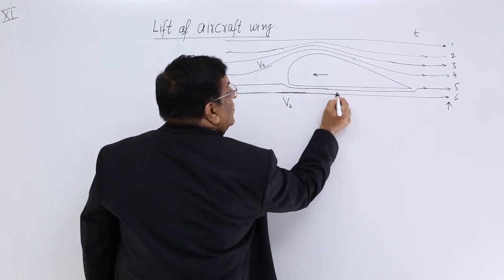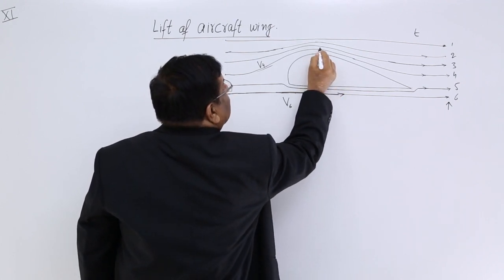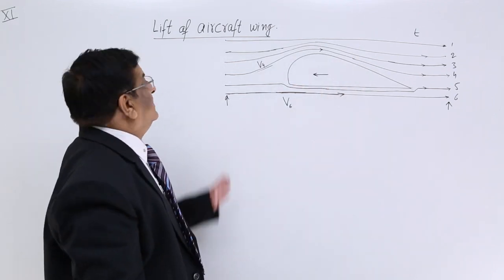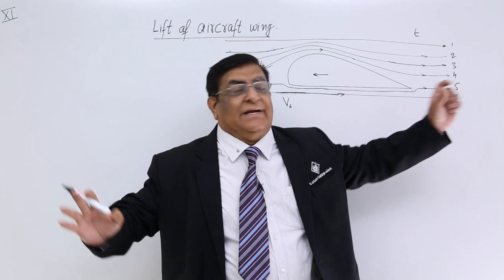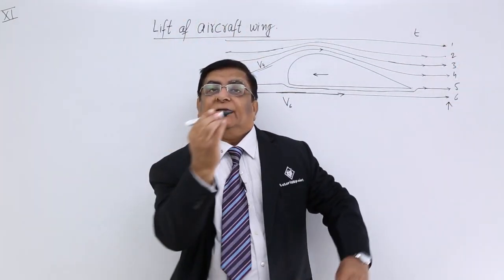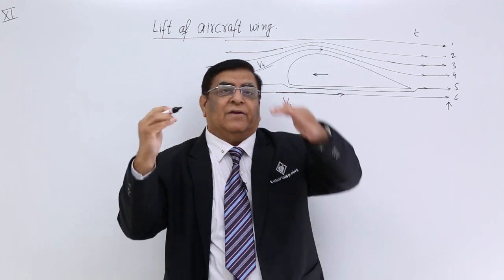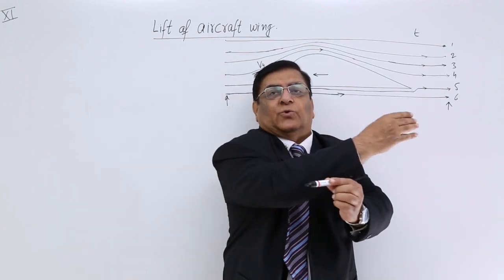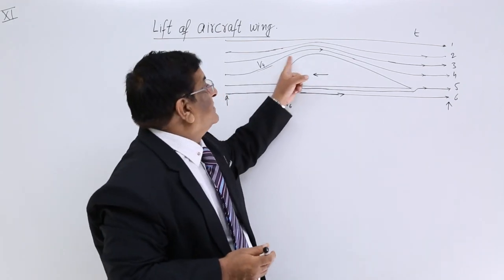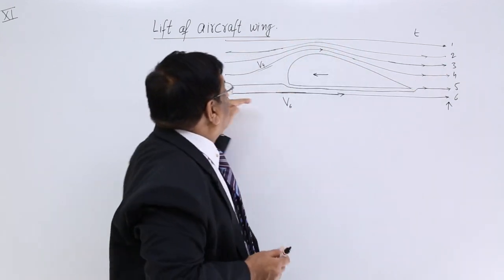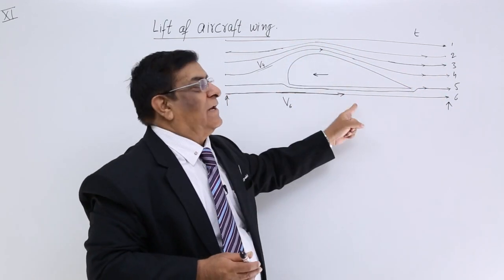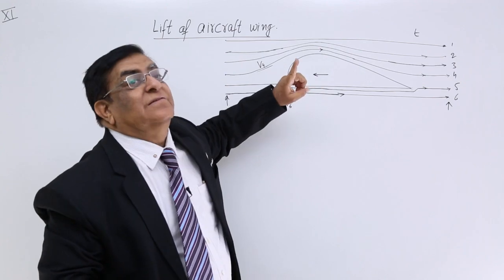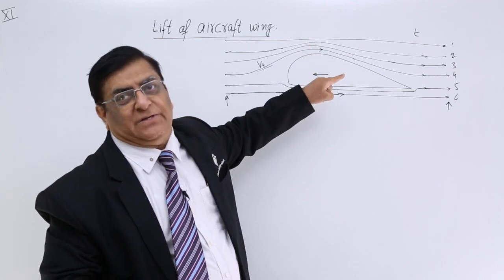Now v6 has lower velocity air in this direction, while v4 has a very high velocity air in this direction, because they have to reach at the same time. The wing is cutting the air and the air will just cut through and meet again here and go. So the top layer molecules have to move faster. Now because of this shape, a difference in velocity has been created — we make this shape purposely like this.